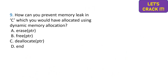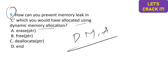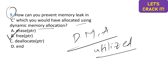The ninth question asks how to prevent memory leaks in C when memory has been allocated using dynamic memory allocation. When dynamically allocated memory is no longer used, it should be freed to avoid waste. We use the concept of freeing the pointer — free(ptr) — which releases the memory. Option B is the correct answer.